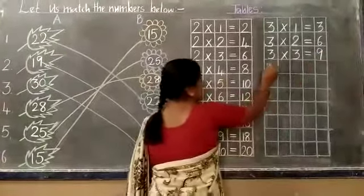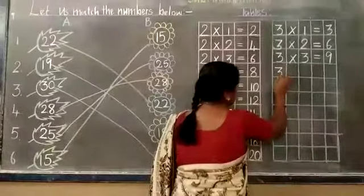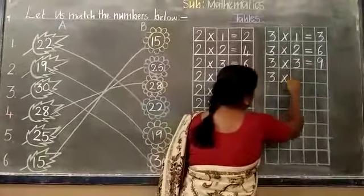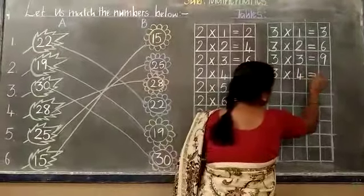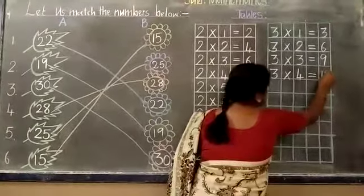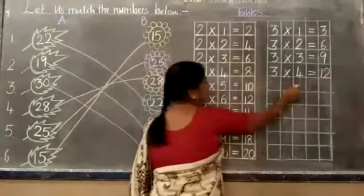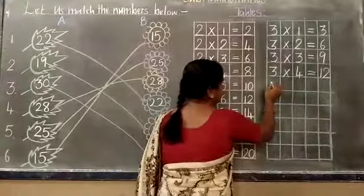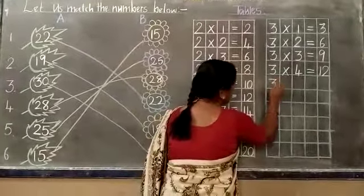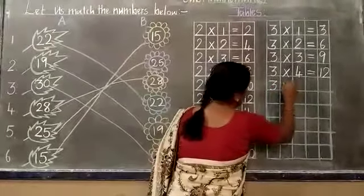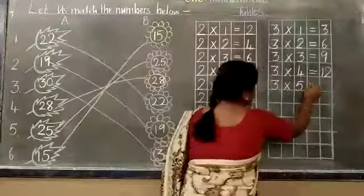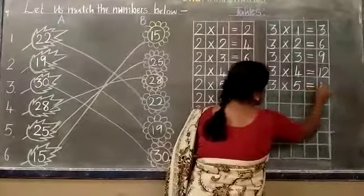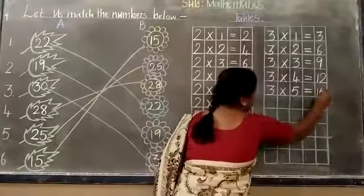3 into 4 is equal to 12. 3 into 5 is equal to 15.